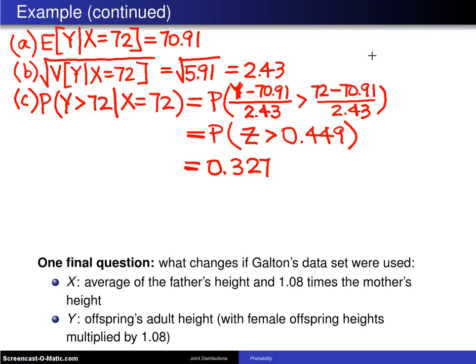One final question here is what would change if Galton's data set instead uses X as the average of the father's height and 1.08 times the mother's height. And that 8% is just to account for the height differences between men and women on average. Well, what this will do is it will take into account not just the father, but the father and the mother and the effect on the child's adult height. And here what we're going to do is not just look at sons, but look at both sons and daughters. And if you have a daughter, you take her adult height and multiply it by 1.08. The effect of all of this is by including mom in the picture now, what you've done is you have decreased the variability on your conditional distribution and you would get a tighter variance in this particular case.